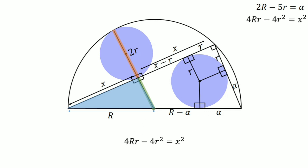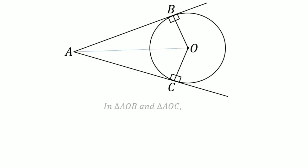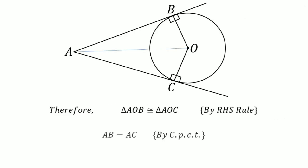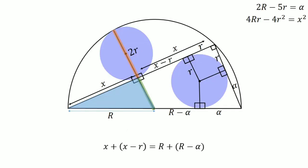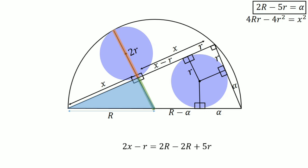By our theorem already proved, we can say x plus (x minus r) equals r plus (r minus alpha). Using the equation alpha equals 2r minus 5r, we finally get x equals 3r. Writing this in the corner.